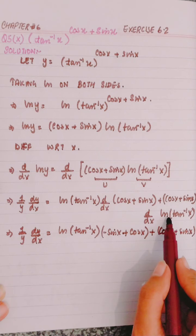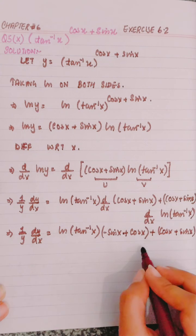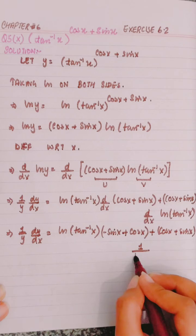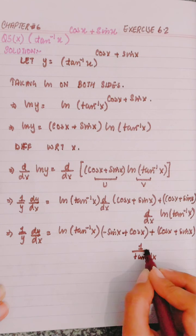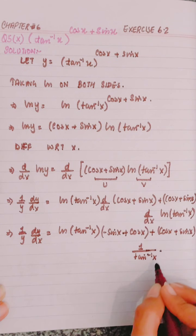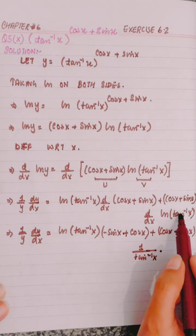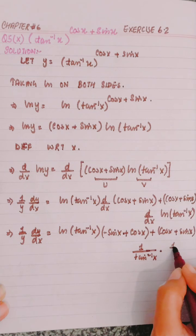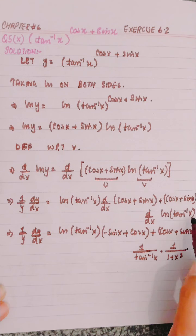Now the derivative of ln of tangent inverse x: because of ln, it will be 1 over tangent inverse x, and then the derivative of tangent inverse x, which is 1 over 1 plus x squared.